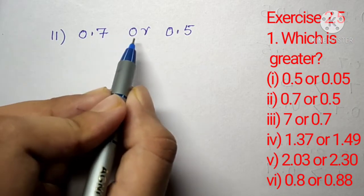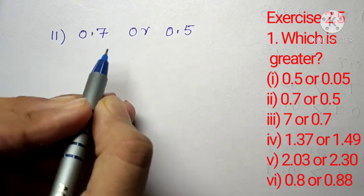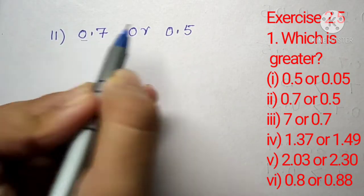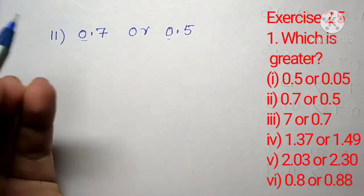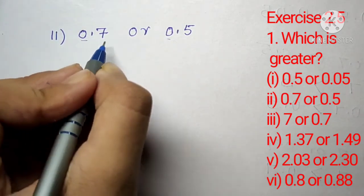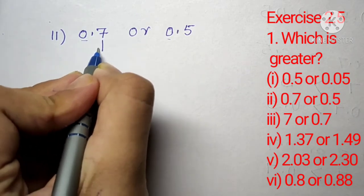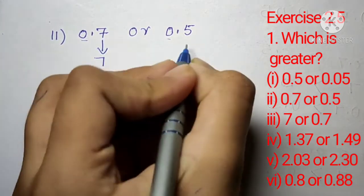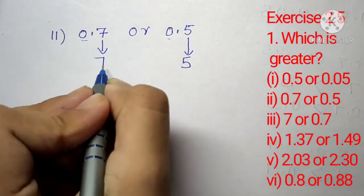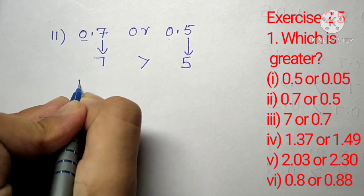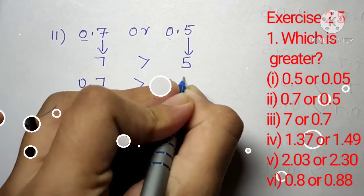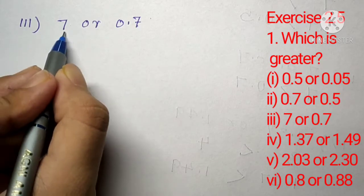Question number 1, part 2: which is greater, 0.7 or 0.5? Both numbers have 0 on the left hand side, so we compare the right hand side of the decimal. Starting from the 10th place, this number has 7 and this number has 5. Since 7 is greater than 5, we can say 0.7 is greater than 0.5.